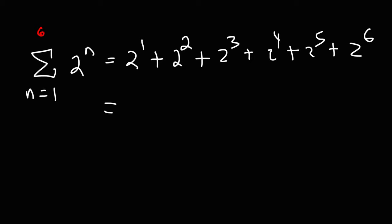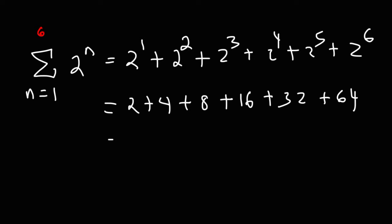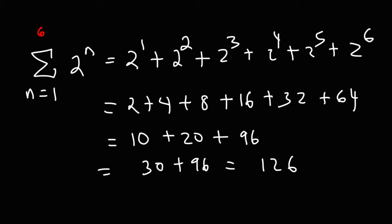And then we just need to perform the operation. 2 squared is 4. 2 to the third power — if you multiply 2 three times, 2 times 2 times 2, that's 8. 2 to the fourth power is 16. And then each number is just 2 times the previous number. So 2 plus 8 is 10, 4 plus 16 is 20, 32 plus 64 is 96. 10 and 20 is 30, 30 plus 96 is 126. So that's the value of this expression.